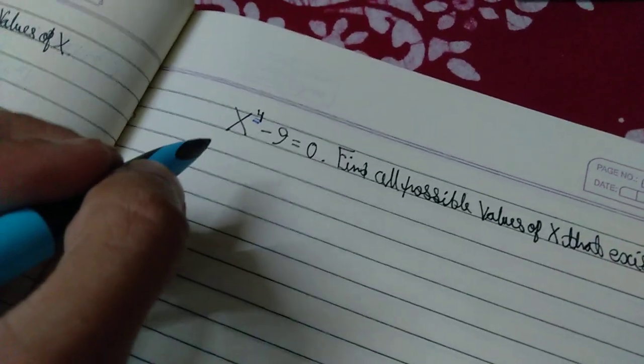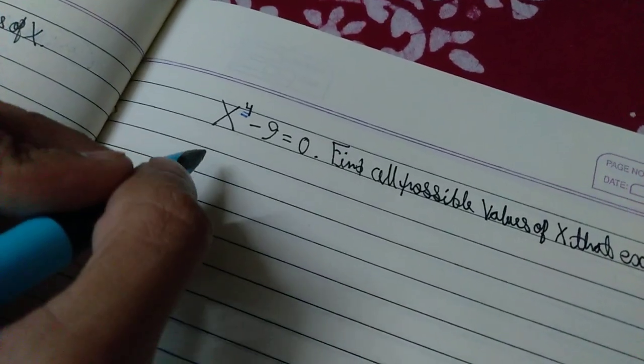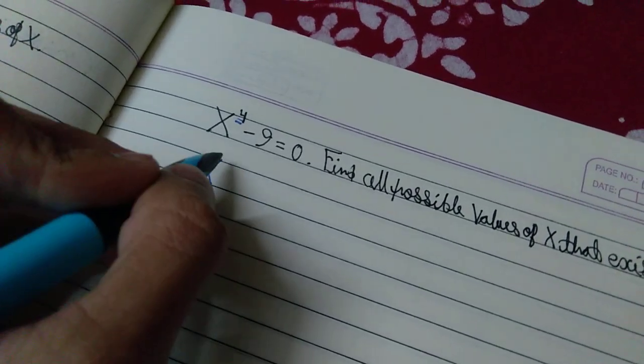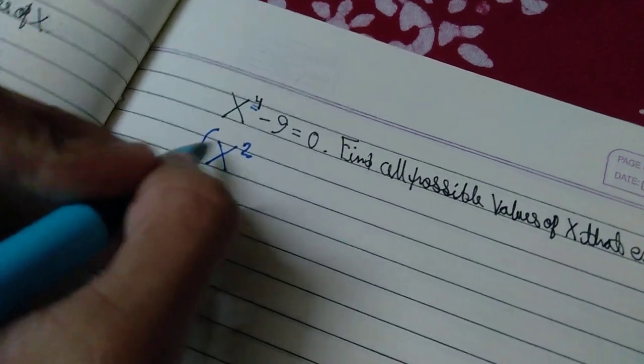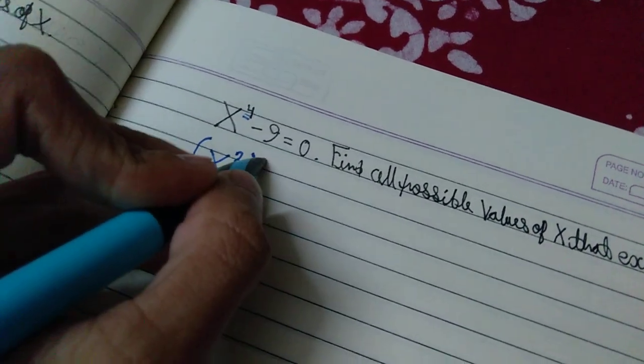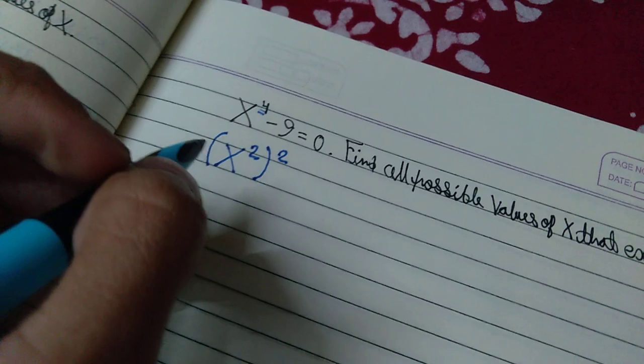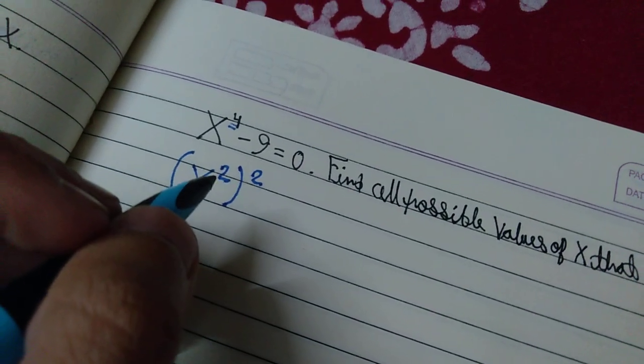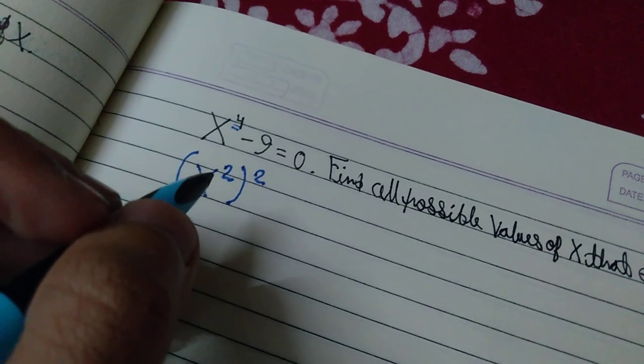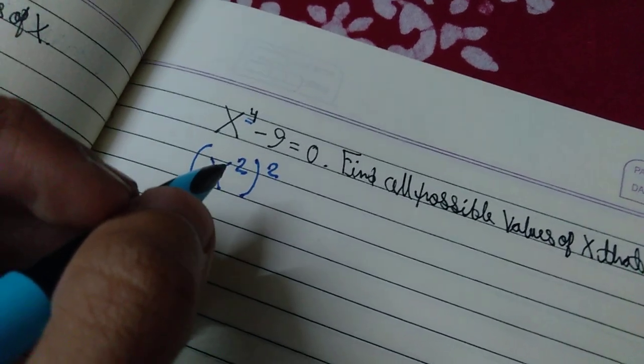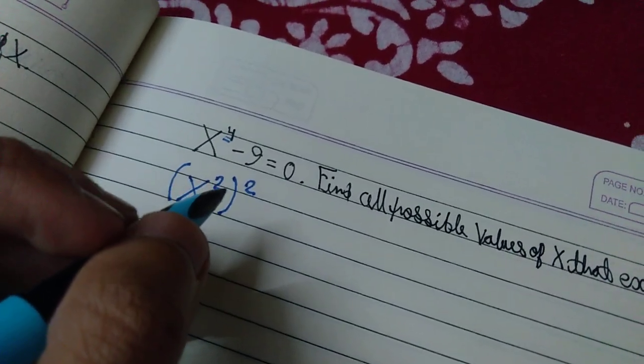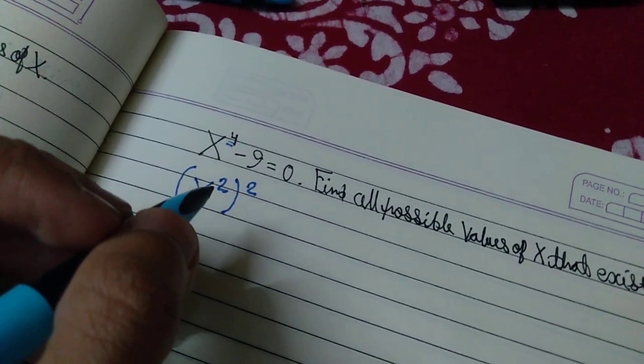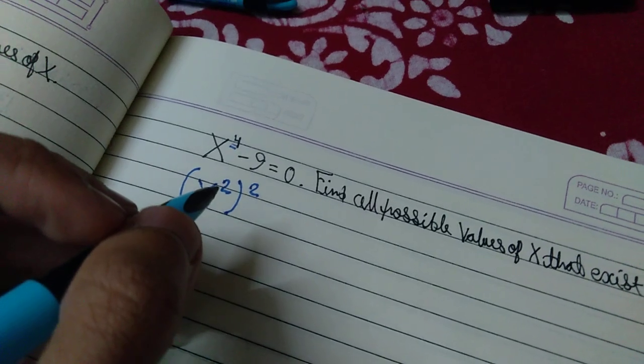Well, the first thing we need to do is write x to the fourth as x squared whole squared. I did this because of an exponential law that says whenever a power is raised to a power, the powers are multiplied.